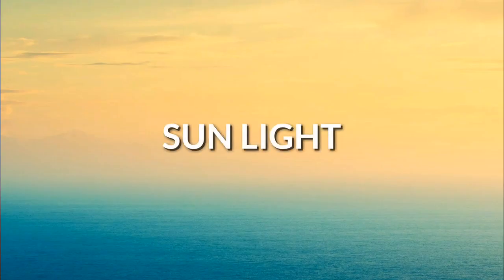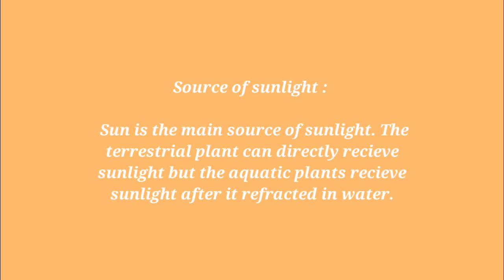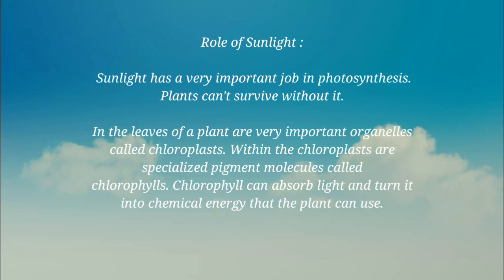Next is sunlight. The sun is the main source of sunlight. Terrestrial plants can directly receive sunlight, but aquatic plants receive sunlight after it is reflected in water. Sunlight has a very important role in photosynthesis — plants cannot survive without it. In the leaves of a plant are important organelles called chloroplasts, within which specialized pigment molecules called chlorophyll can absorb light and turn it into chemical energy that plants can use.